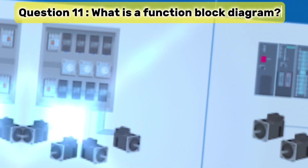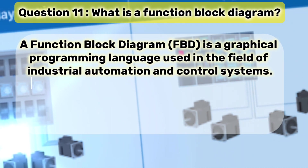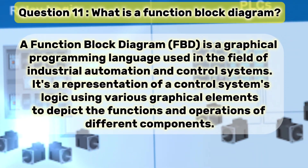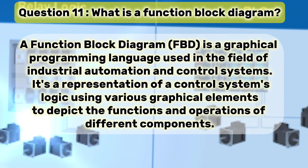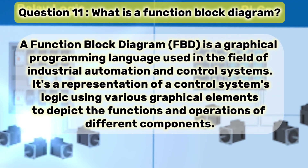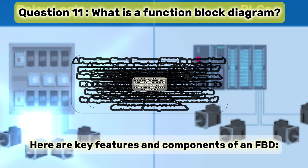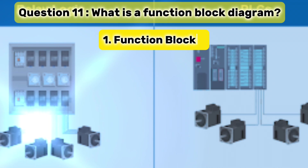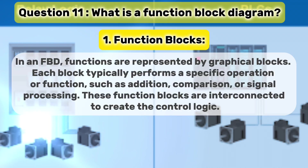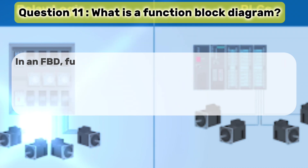Question 11. What is a function block diagram? A function block diagram, FBD, is a graphical programming language used in the field of industrial automation and control systems. It's a representation of a control system's logic using various graphical elements to depict the functions and operations of different components. 1. Function blocks: functions are represented by graphical blocks. Each block typically performs a specific operation or function, such as addition, comparison, or signal processing. These function blocks are interconnected to create the control logic.